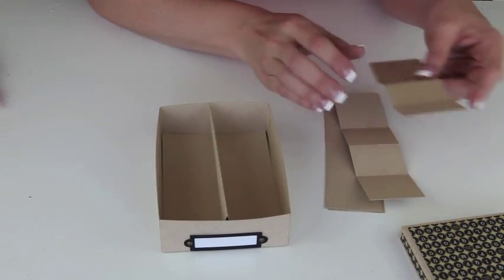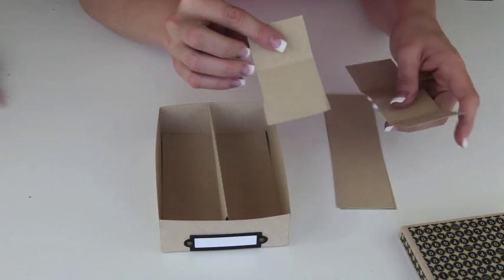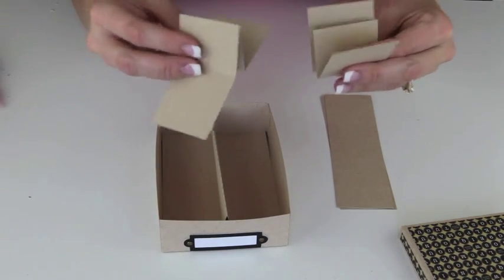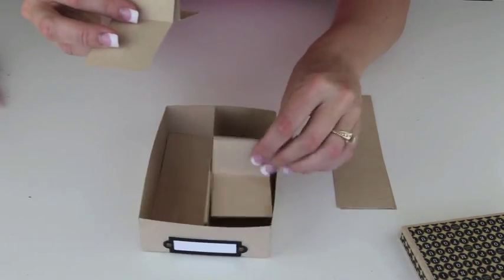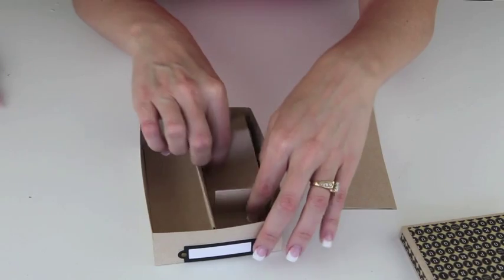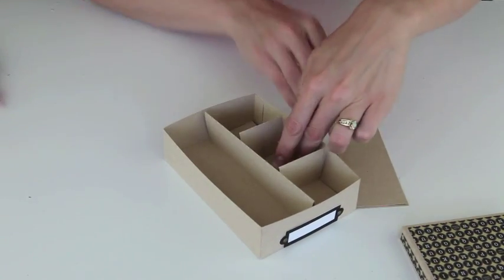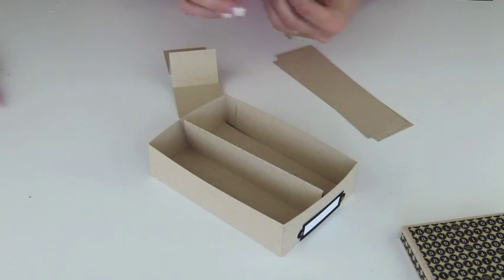Now to create the dividers down the side, you are going to just take two of these and do the exact same thing. Fold it in half. Fold the wings up. And this is going to create half of it and this is going to create half of it. And you can glue them together in that center panel there. And then you're going to do the same thing for the other side.